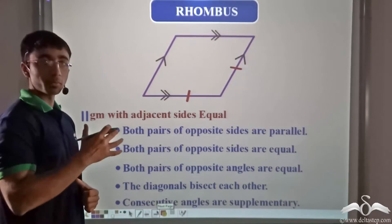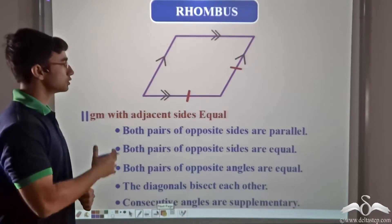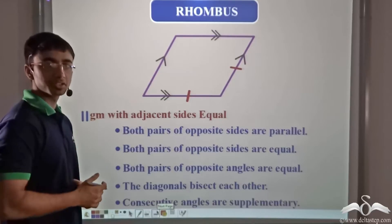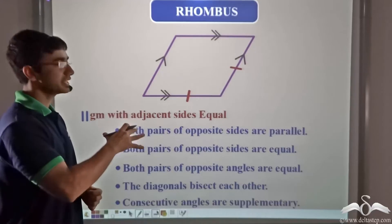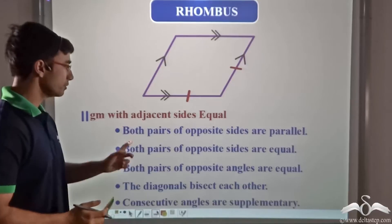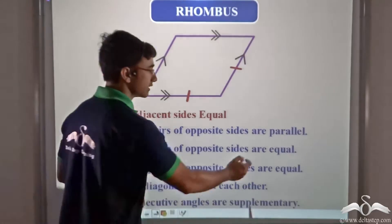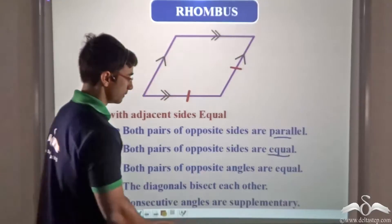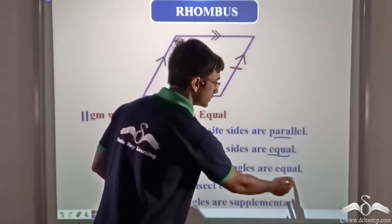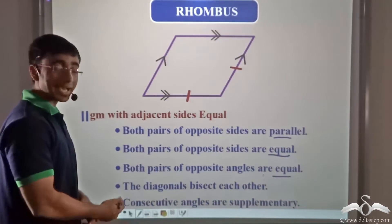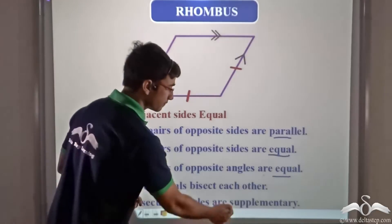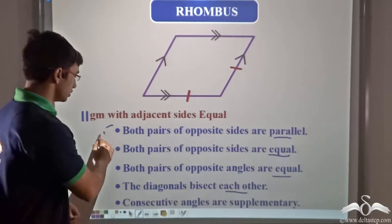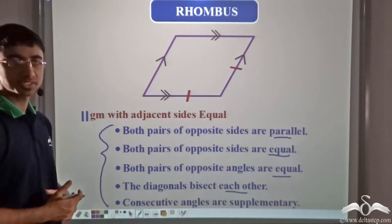Let us study a few of the properties of rhombus. A rhombus, as we have studied, is also a special kind of parallelogram, so it will satisfy all the properties of parallelograms: both pairs of opposite sides will be parallel and equal, both pairs of opposite angles will be equal, the diagonals will bisect each other, and consecutive angles will be supplementary.